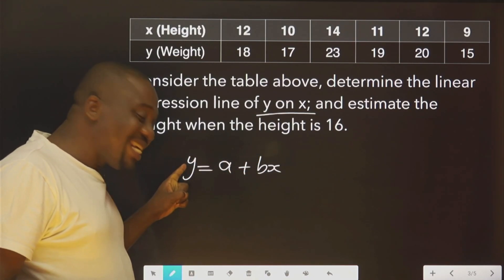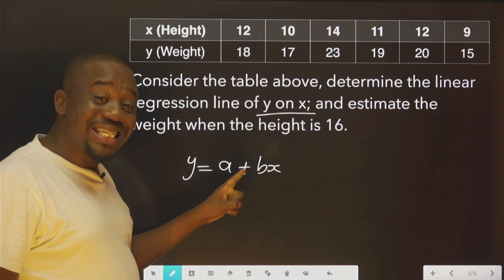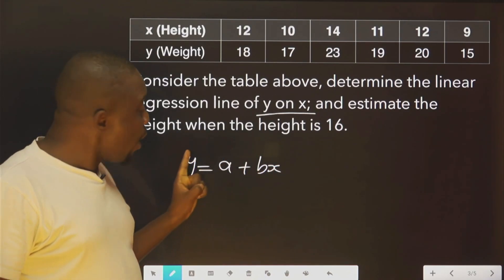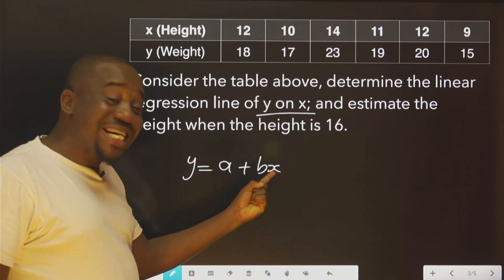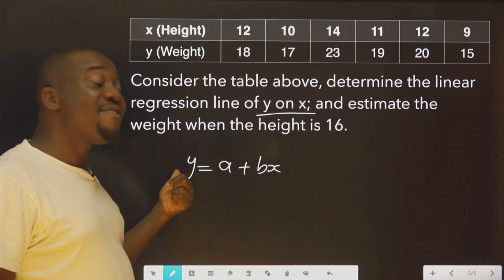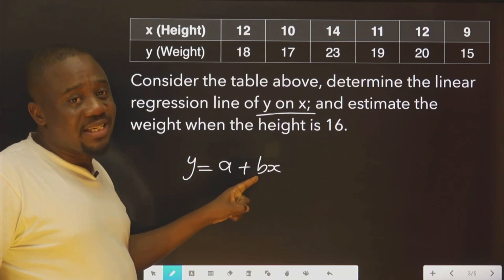In case you don't know, this is the dependent variable. This x is the independent variable. Why do we call this one dependent variable? Because if you increase this or decrease this, it will affect this. But the increment of this does not affect this.